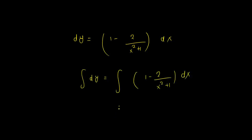Then we write this quantity in this way: 1 times dx minus 2 divided by x squared plus 1 times dx. So this is x, and this is 2 times tan inverse of x plus some constant of integration.